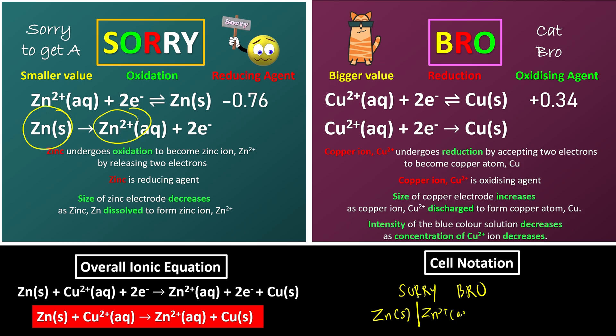So once we have this one, we're done with sorry, do a double line. And now we start with bro, which is Cu 2+ aqueous. So once we have this one, draw a line again, and then last one is the copper solid.